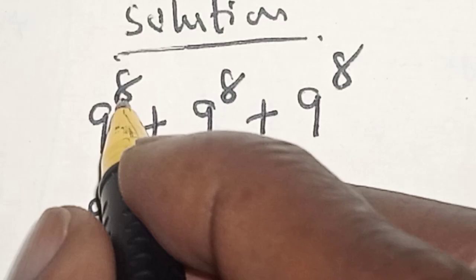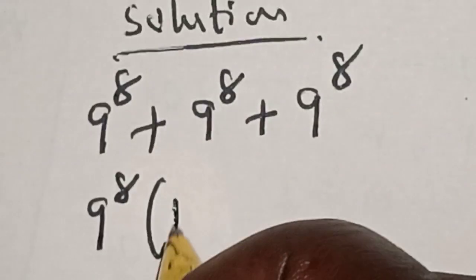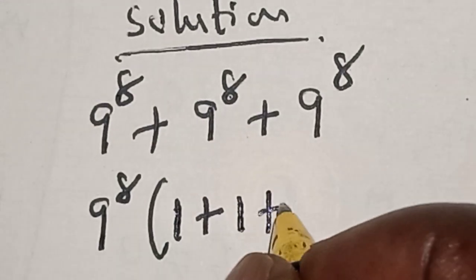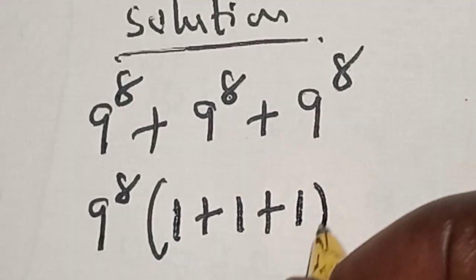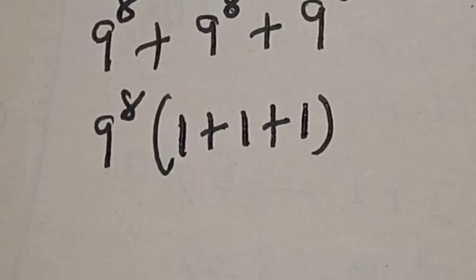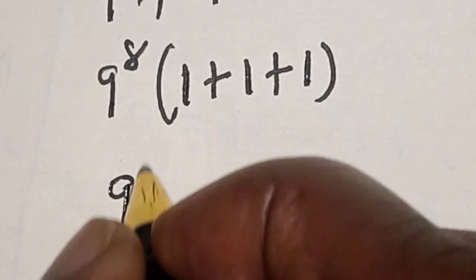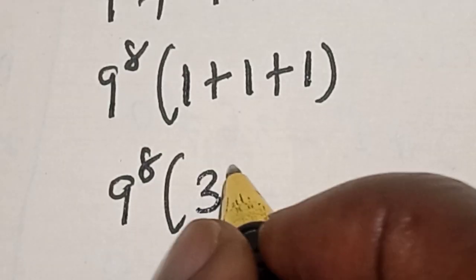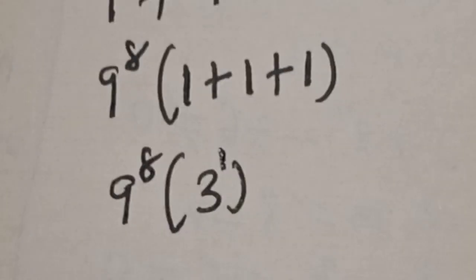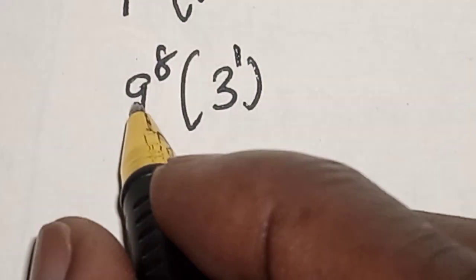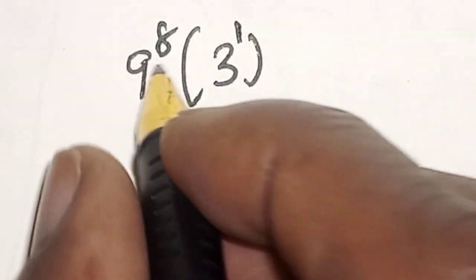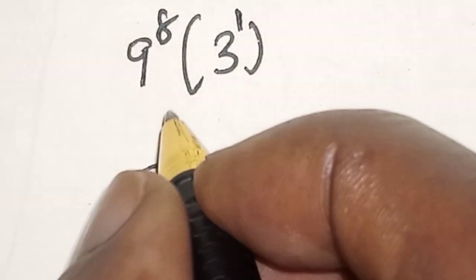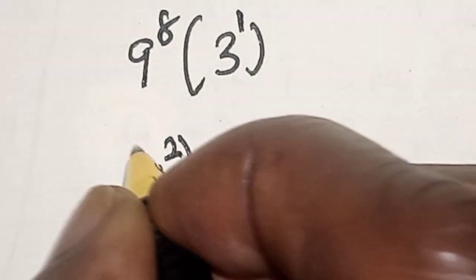9 raised to power 8 — each term divided by itself gives 1 plus 1 plus 1. So this is 9 raised to power 8 into 1 plus 1 plus 1, which equals 9 raised to power 8 times 3 raised to power 1. Now, 9 raised to power 8 can be written as 3 squared, raised to power 8, multiplied by 3 raised to power 1.